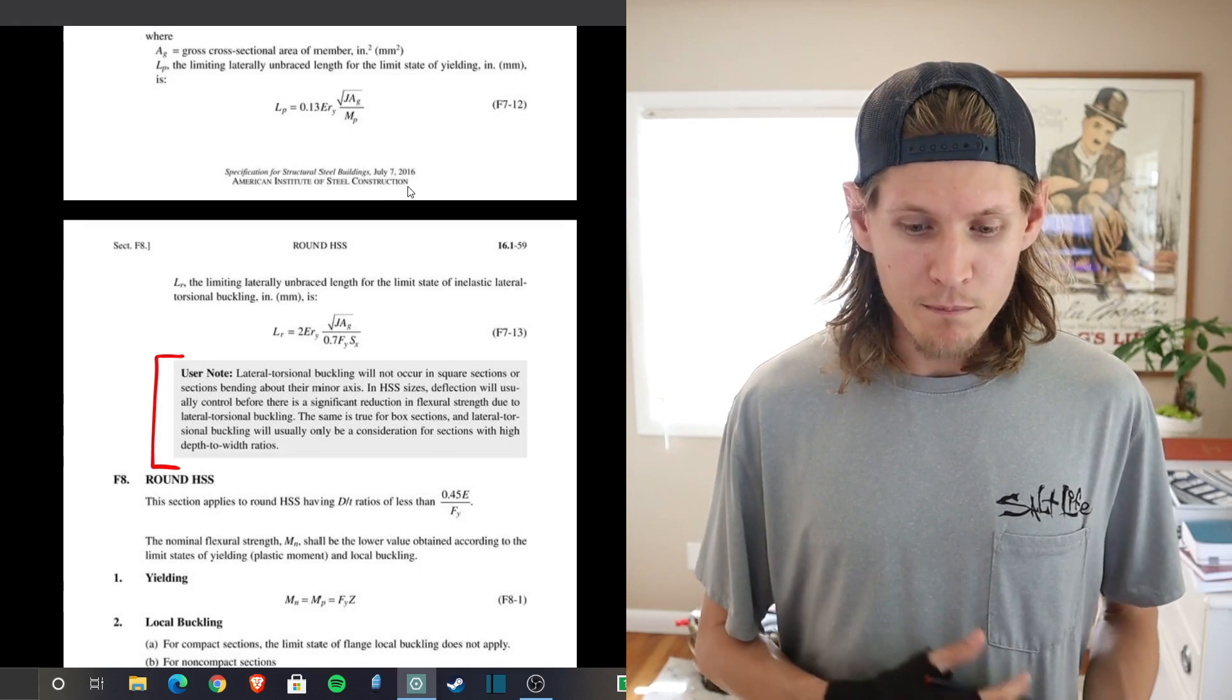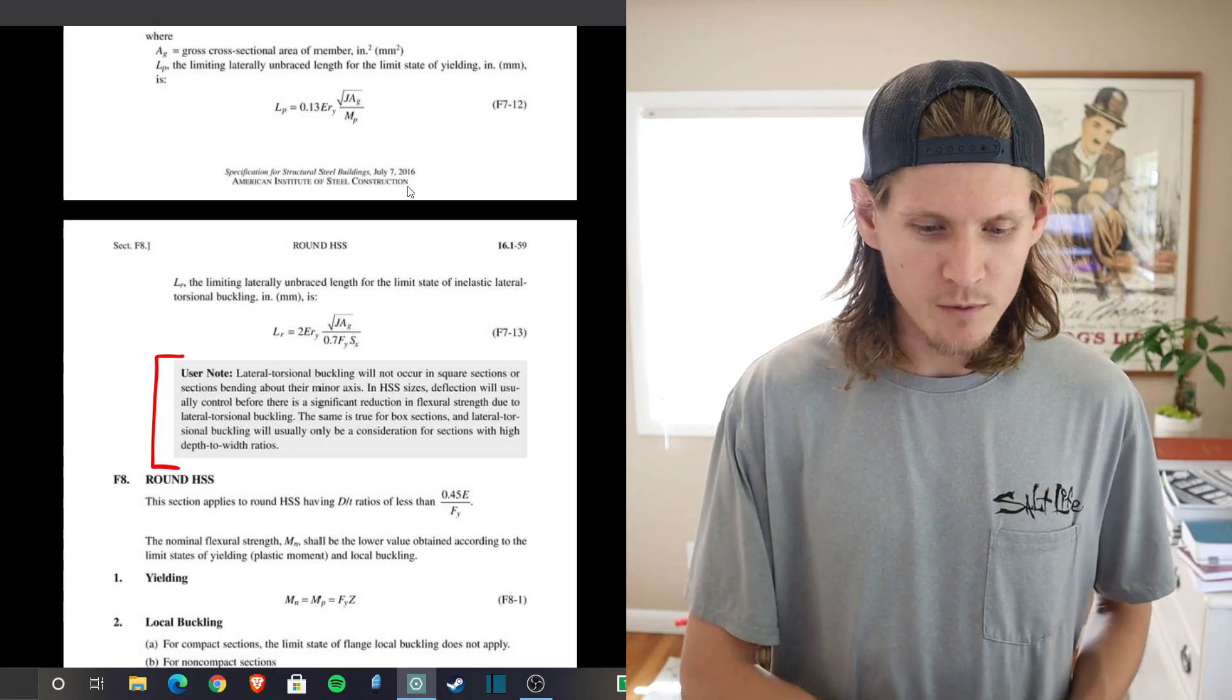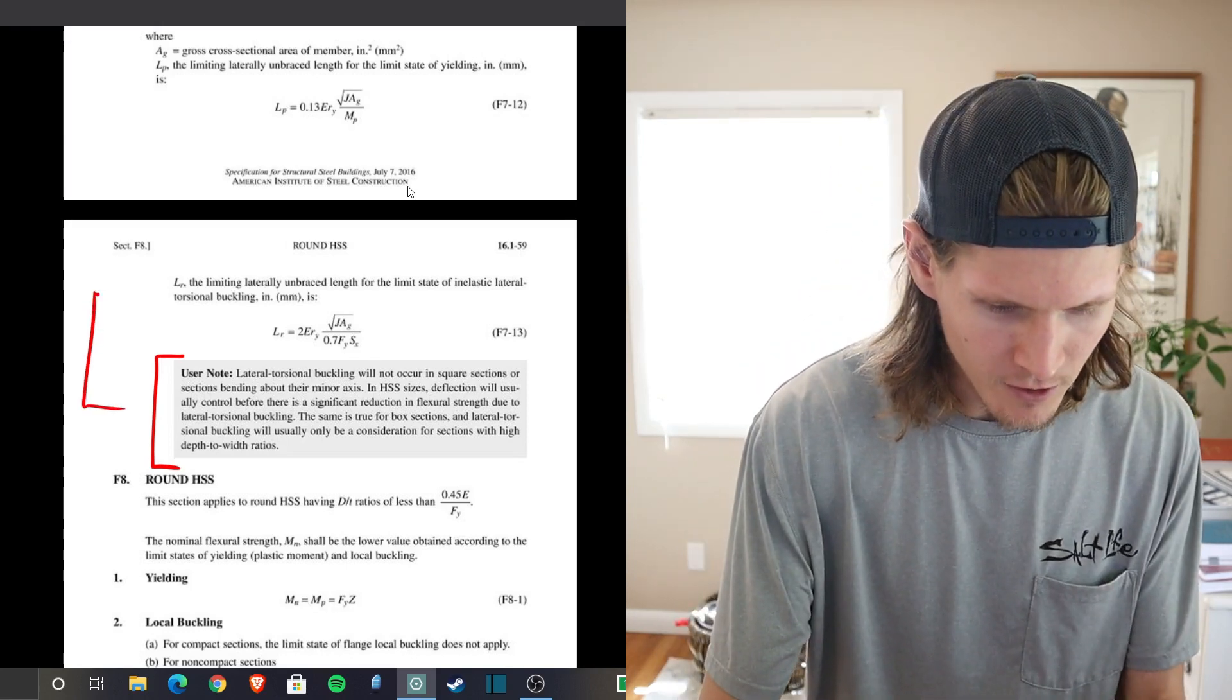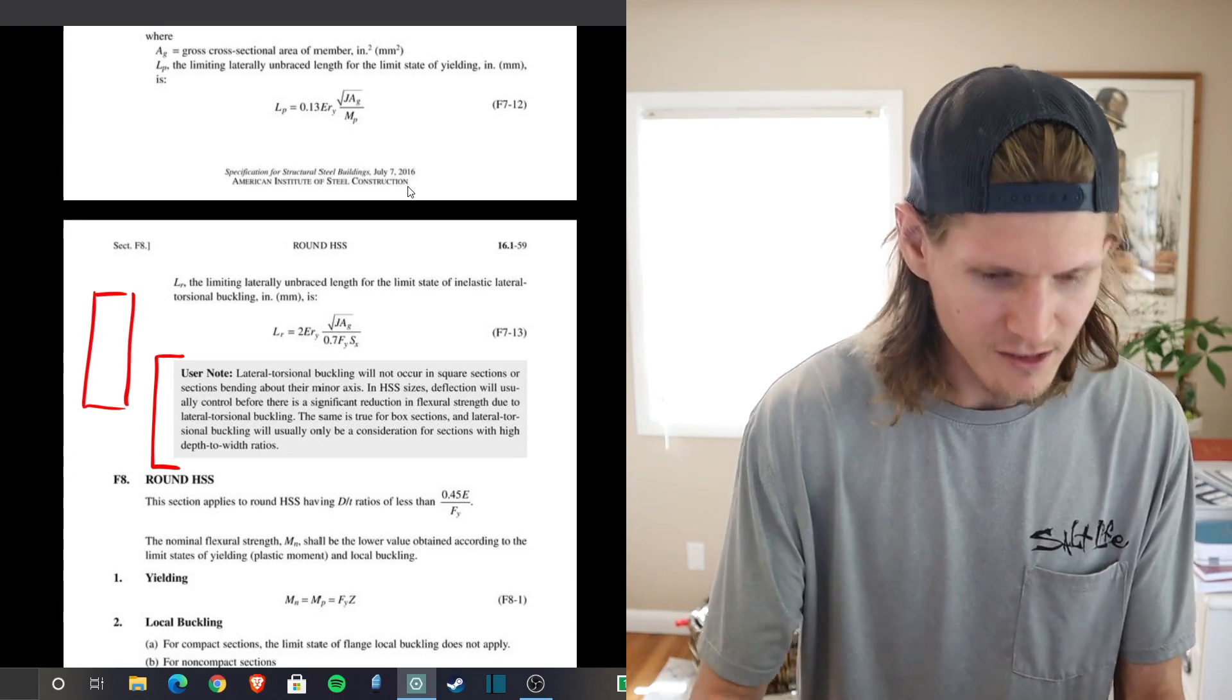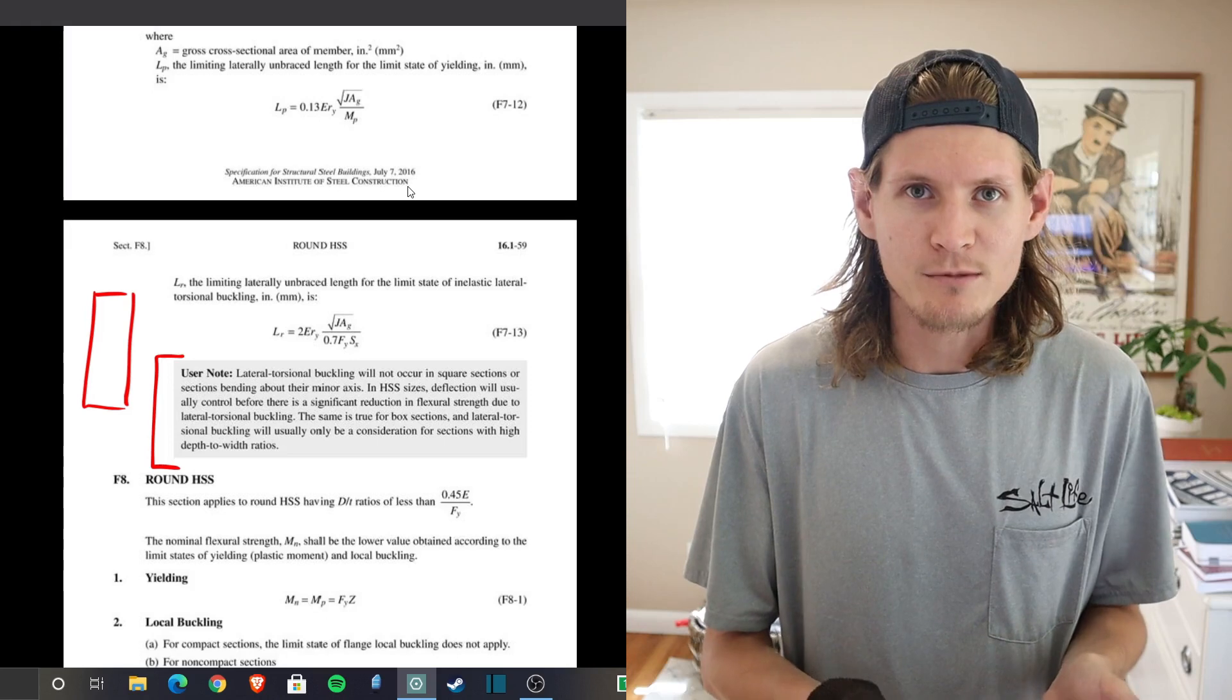The same is true for box sections and lateral torsional buckling will usually only be a consideration for sections with high depth to width ratios. I mentioned that at the very beginning. I'll draw it again here real quick. When you start to get into some sections that are very very deep and not very wide that's where this comes into effect.